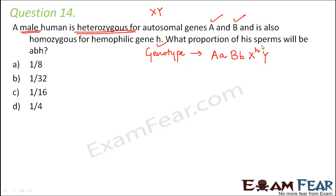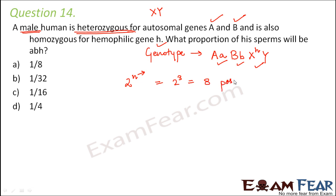We need to find what proportion of his sperms would be ABH. Using the formula for possible number of gametes — 2 to the power n, where n is the number of heterozygous pairs — we have three heterozygous pairs: Aa, Bb, and X^H Y. So 2 to the power 3 equals 8 possible gametes.